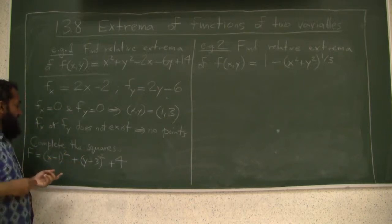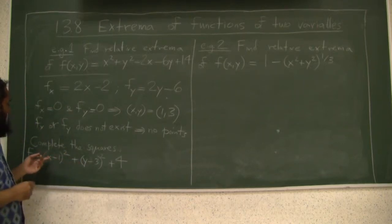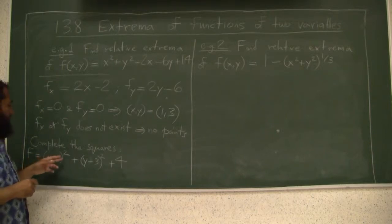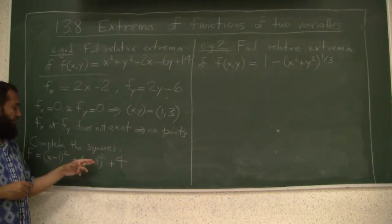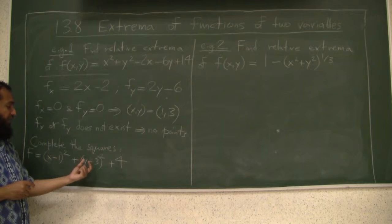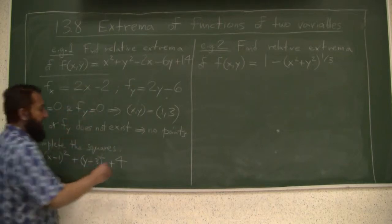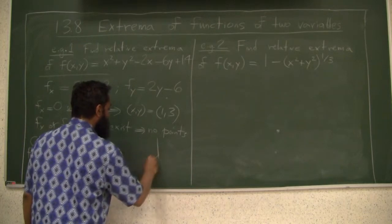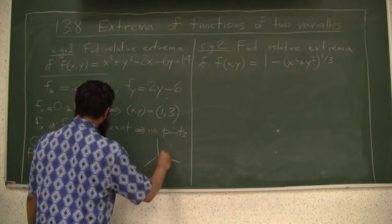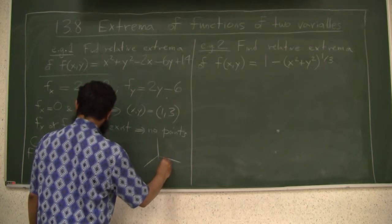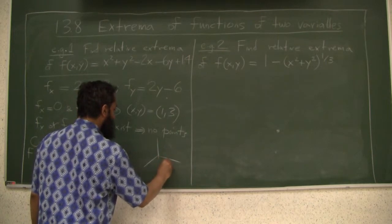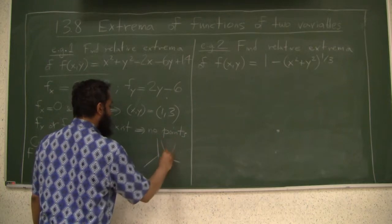Essentially, this is like f equals x squared plus y squared, but it has been shifted and plus 4, it has been shifted up. So what this is, it is like a paraboloid, but over the point 1, 3, and at the height of 4.